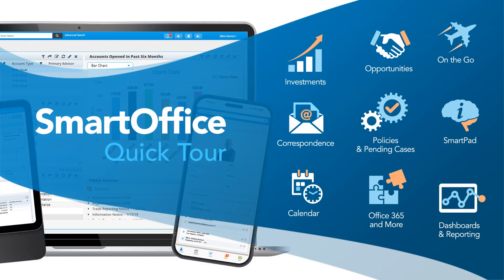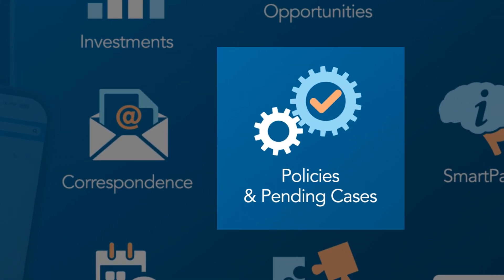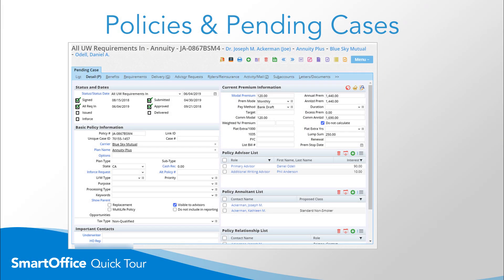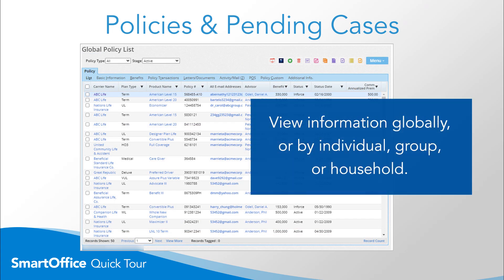Whether you're a sole practitioner, part of a multi-advisor practice, a general agent, or a BGA, SmartOffice has the tools to help you drive production. The policy area of SmartOffice is a multi-carrier tracking and management platform for both in-force and pending insurance products covering all lines of business. Advisors or home offices can view policy information globally, by individual, group, or household, as well as track the purchase, sale, and sub-account shares for variable life insurance.